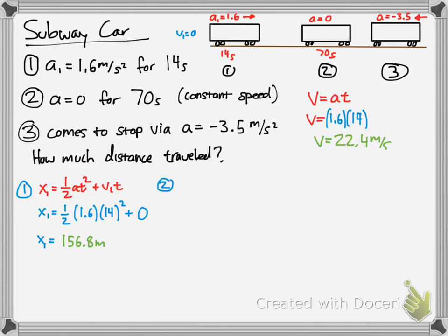Now we use that velocity we calculated. What was the speed after 14 seconds? That's where we plug in the initial speed and multiply it by how long it was traveling, 70 seconds. So you multiply those two together and get 1,568 meters.